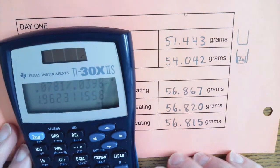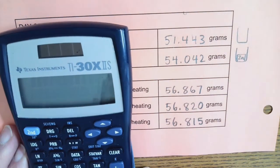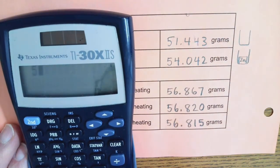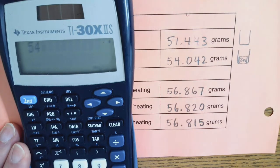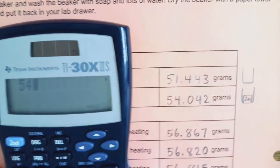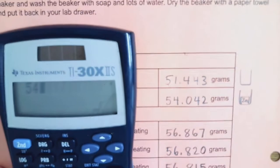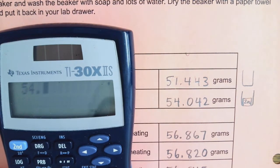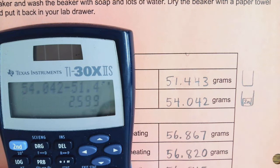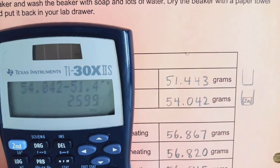So I just want to take 54.042, subtract out the empty beaker mass, 51.443, and my mass of zinc is going to be 2.599.